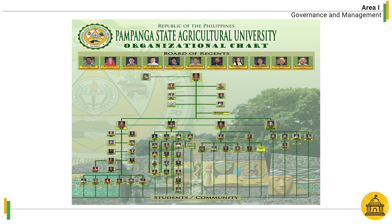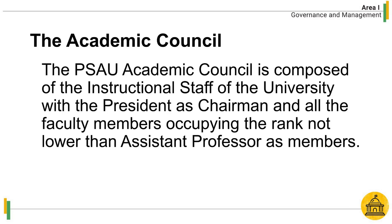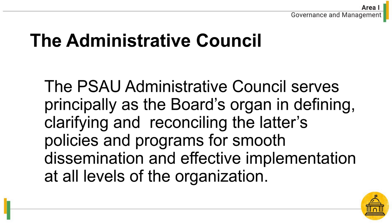The PSAU organizational chart shows the Board of Regents, key university officials, the middle line, and staff units. The admin and academic councils exist and assist the university president in decision-making. The PSAU academic council is composed of the instructional staff of the university, with the president as chairman and all faculty members occupying a rank not lower than assistant professor as members. The PSAU admin council serves principally as the board's organ in defining, clarifying, and reconciling the latter's policies and programs for smooth dissemination and effective implementation at all levels of organization.